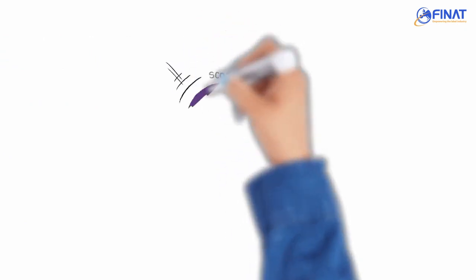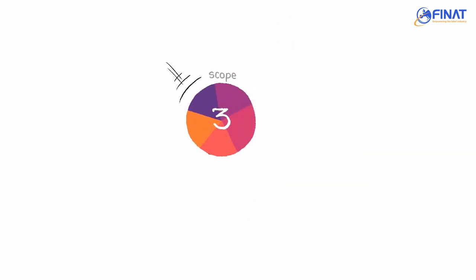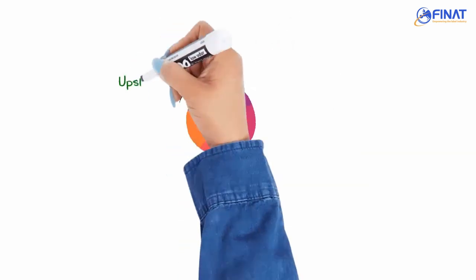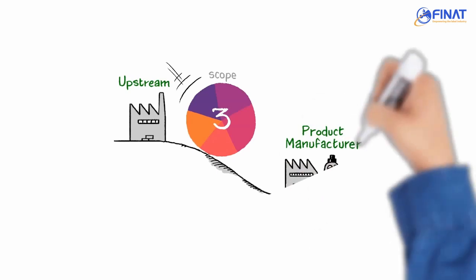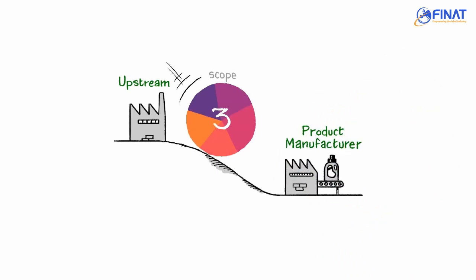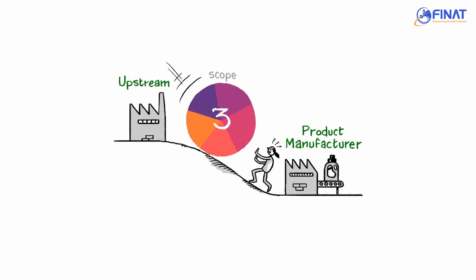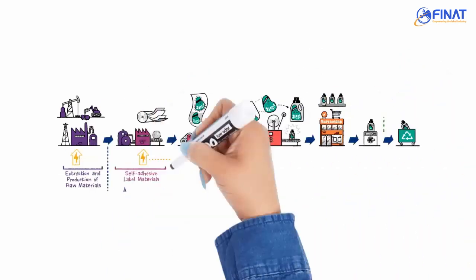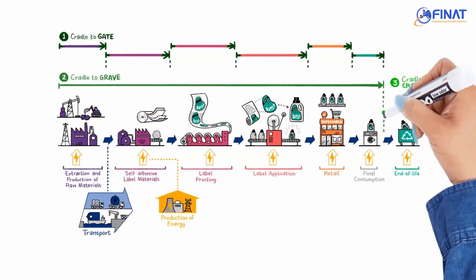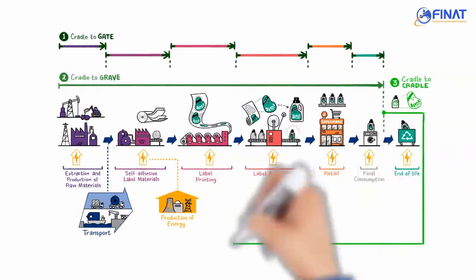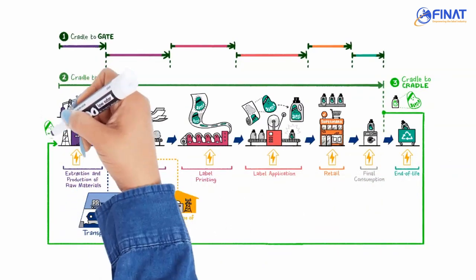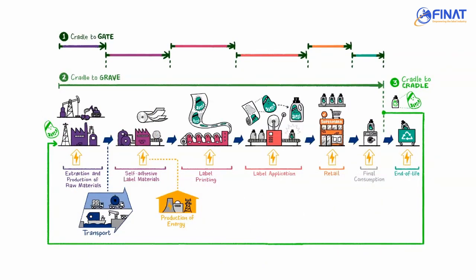In many PCF calculations, the Scope 3 emissions are often the largest component of the overall PCF. This becomes a challenge as the information needed for Scope 3 calculations is not coming from the manufacturer of the final product, but from the rest of the upstream value chain. Cradle to Gate is the most common approach, but Cradle to Grave and even Cradle to Cradle might be important depending on the application and how and where the information is being used.